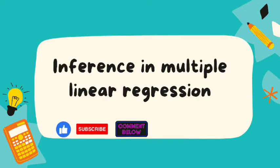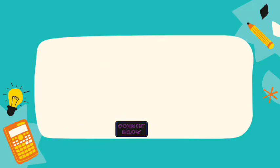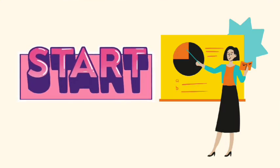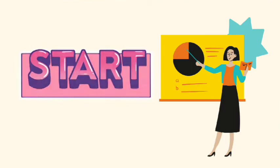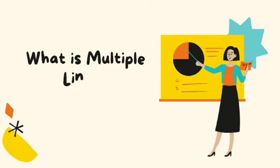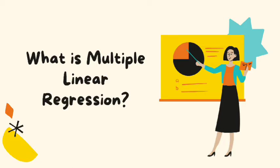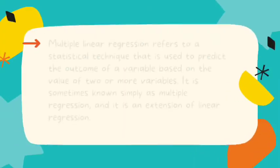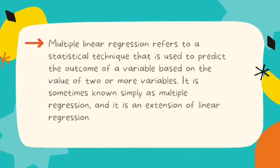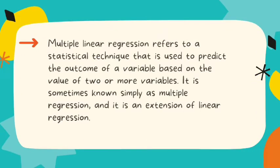Hello everyone, in today's video we're going to talk about influence in multiple linear regression. Don't forget to like, comment, share and subscribe. Multiple linear regression refers to a statistical technique that is used to predict the outcome of a variable based on the value of two or more variables.